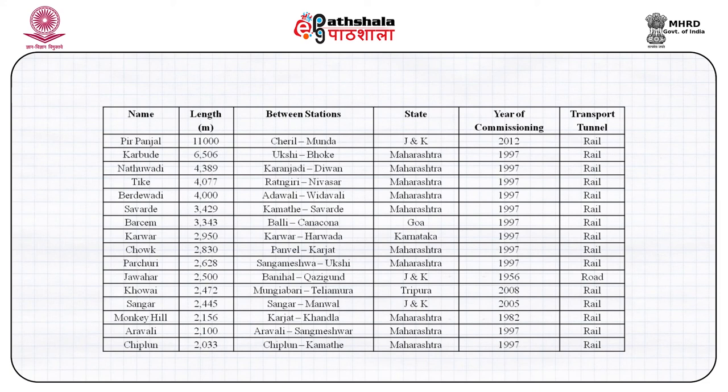Most of the important Indian tunnels are along railway routes. We have very few tunnels along roads. If you go from Kalka to Shimla, we have almost 103 tunnels — along 90 kilometers of length, we have more than 100 tunnels. The longest one is perhaps 1.5 kilometers in length.